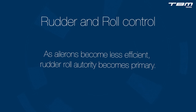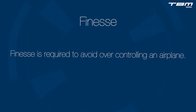As an airplane slows below reference approach speed — less than 1.3 VSO — the ailerons become less efficient. However, the rudder's secondary effect, contributing to roll control, becomes primary. Finesse is required to avoid over-controlling an airplane. If not managing the rudder properly, abrupt applications of either the flight controls or power when flying at the edge of the envelope could pitch, roll, or yaw an airplane forcefully enough to induce and aggravate a stall.